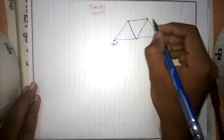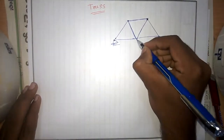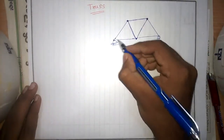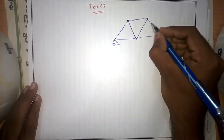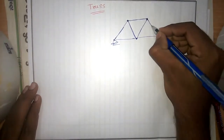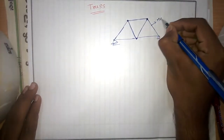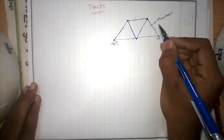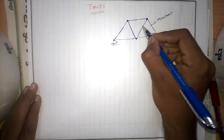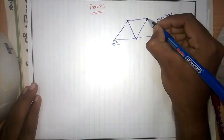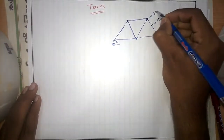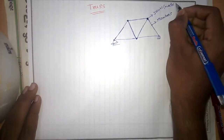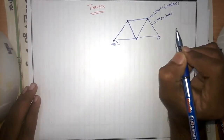The connection points are said to be joints, and these joints are frictionless joints. Each individual bar is said to be a member. These members are connected by joints, which are also said to be nodes. These nodes are frictionless.